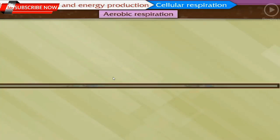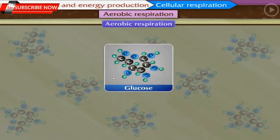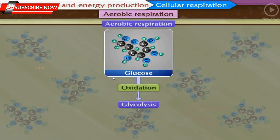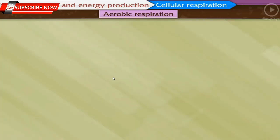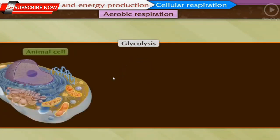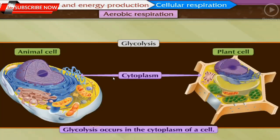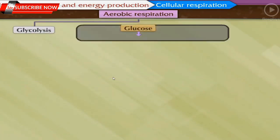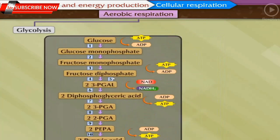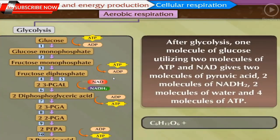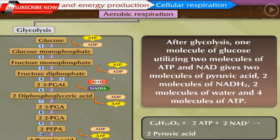Aerobic respiration: In aerobic respiration, glucose is oxidized in three steps — glycolysis, Krebs cycle, and electron transfer chain reaction. Glycolysis occurs in the cytoplasm of a cell. A molecule of glucose is oxidized step by step in a total of ten steps. After glycolysis, one molecule of glucose, utilizing two molecules of ATP and NAD, gives two molecules of pyruvic acid, two molecules of NADH₂, two molecules of water, and four molecules of ATP.